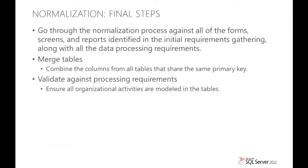After normalizing one form, you go and normalize all the forms, reports, and web pages to come up with tables that meet all the data requirements your database has to support. As you normalize these other forms, you'll get many tables that have the same primary key as tables you've already generated, and in your final design you need to merge those together. For example, normalizing an order form and an inventory warehouse form will each likely produce a part table with part number as its key — you need to merge those into one table, since you want only one table recording everything any part of your system needs to know about the parts your company is selling.